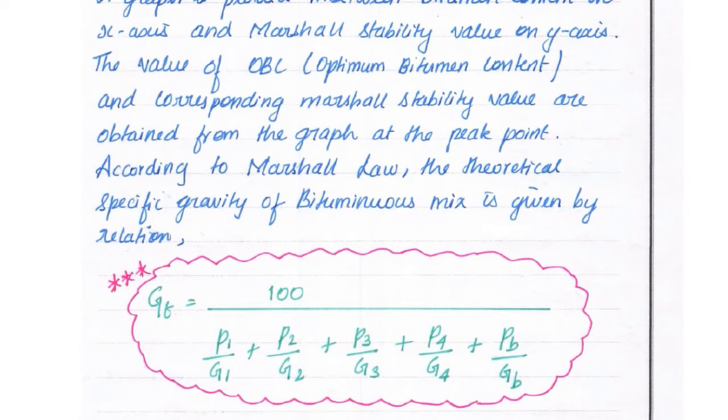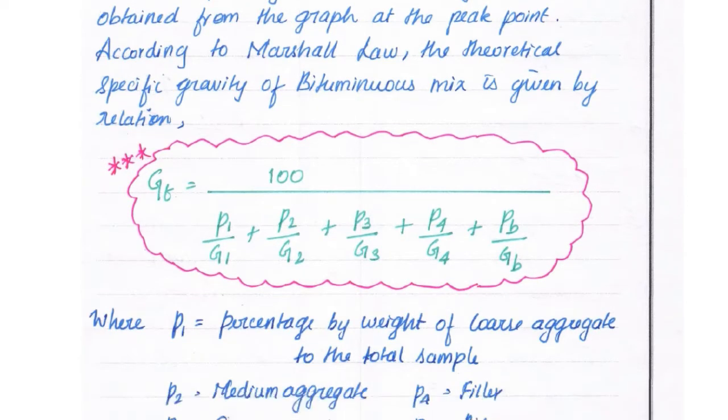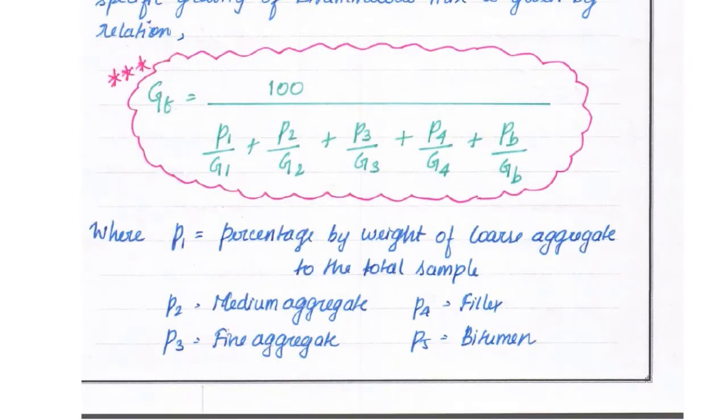According to Marshall Law, the theoretical specific gravity of bitumen mix is given by relation: Gt = 100/(P1/G1 + P2/G2 + P3/G3 + P4/G4 + Pb/Gb), where P1 = percentage by weight of coarse aggregate to total sample, P2 = medium aggregate, P3 = fine aggregate, P4 = filler, and Pb = bitumen.